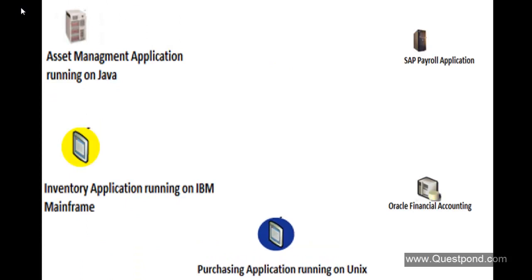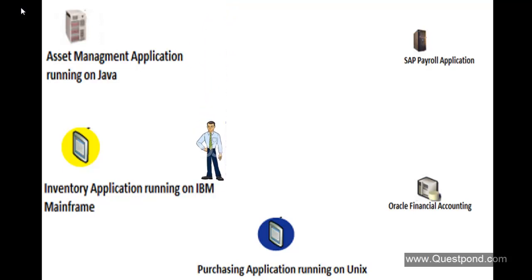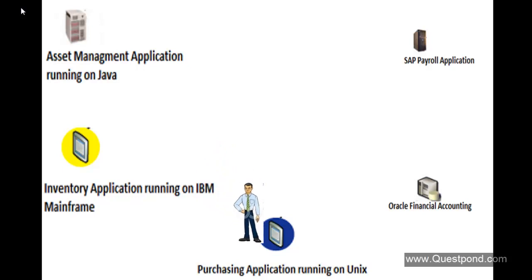Let's talk about the Purchasing application that this organization uses. This application runs on Unix and manages the purchase order requests sent out to vendors, the vendor information, the quotations, etc. — meaning anything involved in purchasing. So in future, if any asset or machinery part needs a replacement, people would go and check in the Inventory application to verify if the storerooms contain extra stock. If yes, they would pick from there, but if not, then the person has to go to the Purchasing application and raise a purchase order request for that asset.